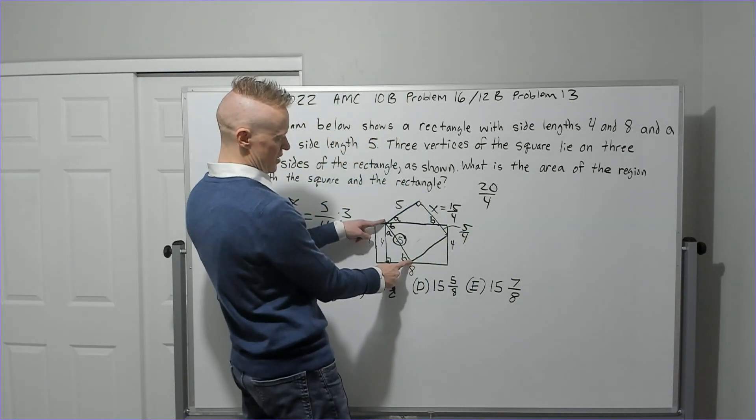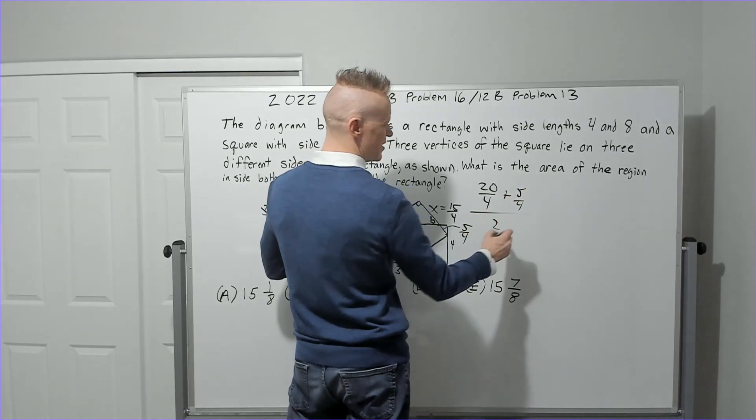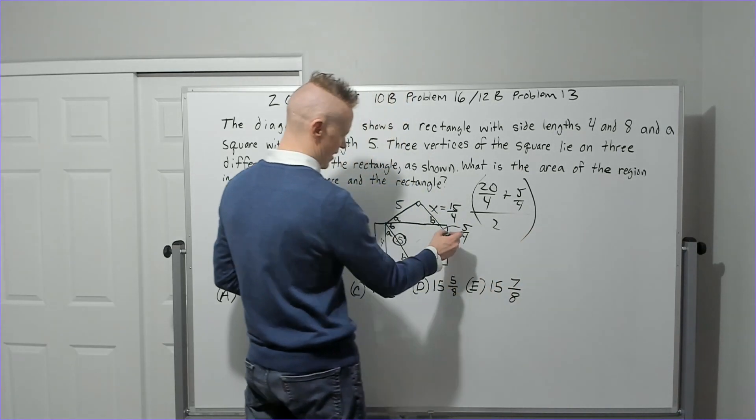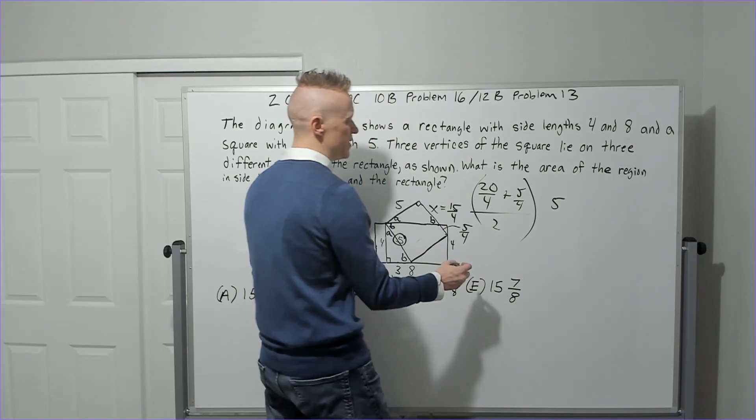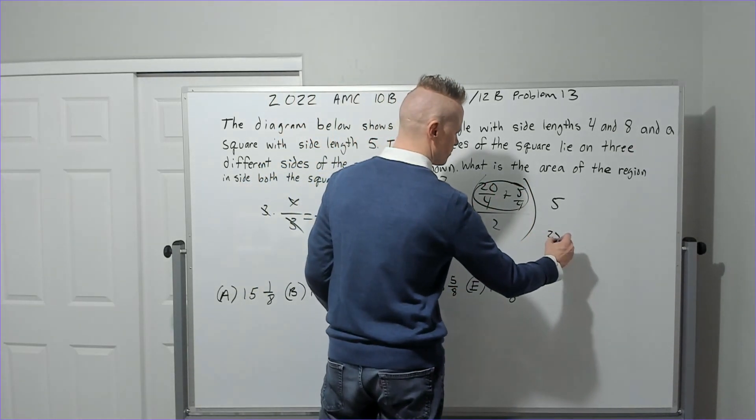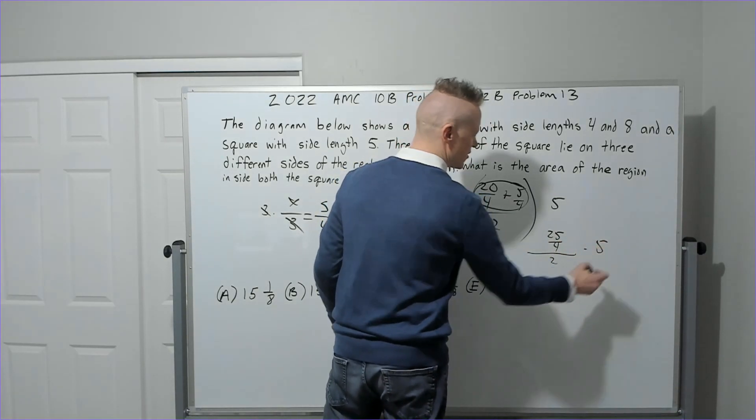So base 1, 20 over 4. Base 2, 5 over 4 divided by 2. That's the average of the bases times the height. The height is going to be this length here, which also happens to be 5. I'm going to make this 25 over 4. And then that's over 2. And then it's times 5.